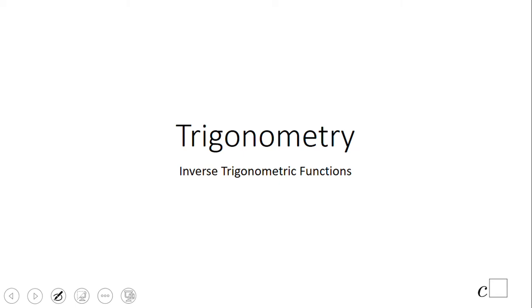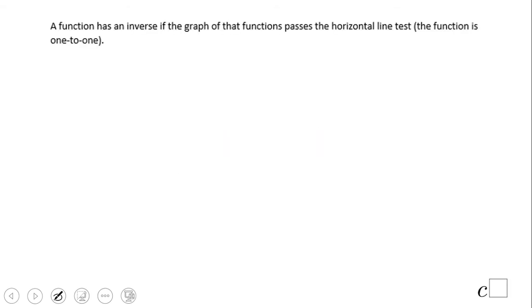Welcome or welcome back to C squared. In this video clip we're going to take a look at inverse trigonometric functions. First of all, let's take a look at this statement: A function has an inverse if the graph of the function passes the horizontal line test, that means the function is one-to-one.